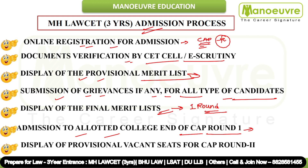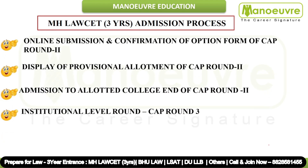Your seat in that college is fixed for 3 years. Now, after Round 1, comes the display of provisional vacant seats for CAP Round 2. Colleges will display how many seats are vacant for Round 2. Students who did not get admission in Round 1 can apply for Round 2. If a seat is available in their preferred college, they will get admission according to cut-off marks. Every seat — including management quota — goes through the cut-off only.